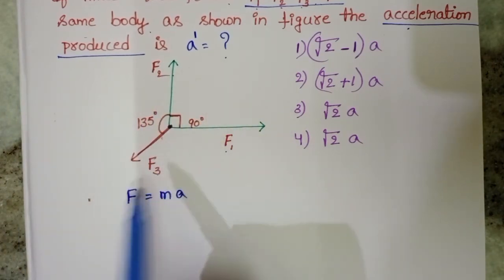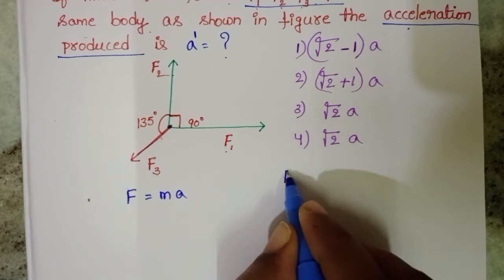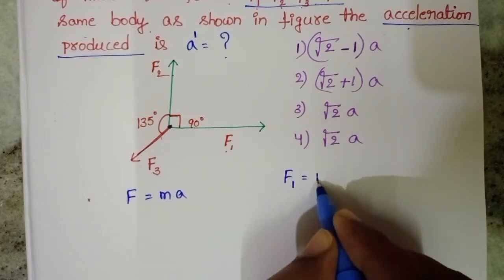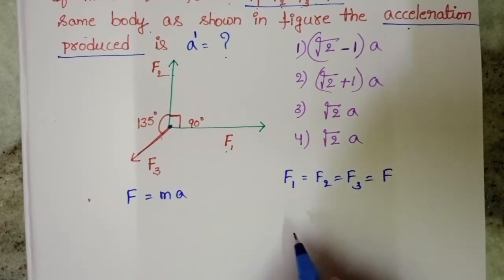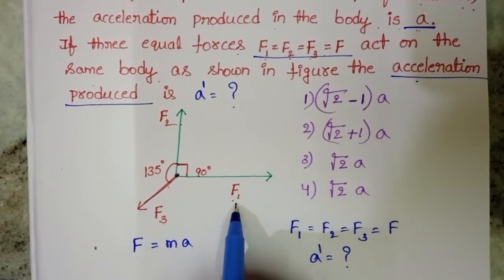F1, F2, and F3. The given condition is magnitude of the forces are equal: F1 equals F2 equals F3 equals F. The angle between F1 and F2 is 90 degrees.